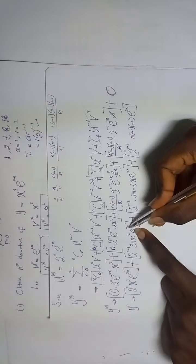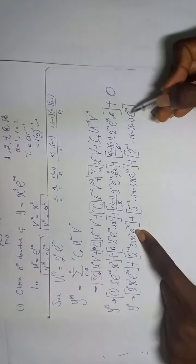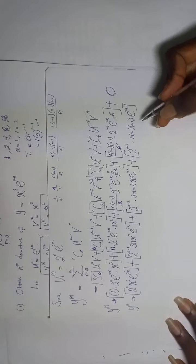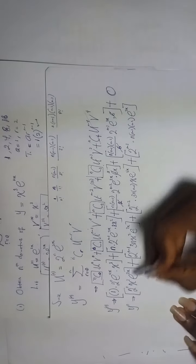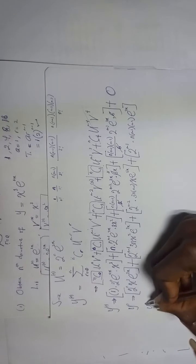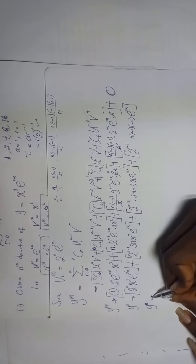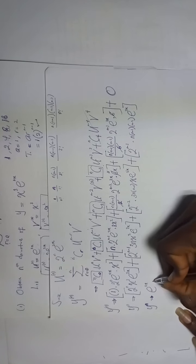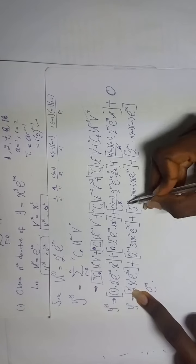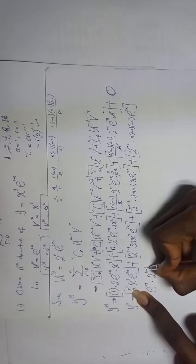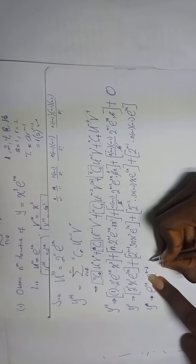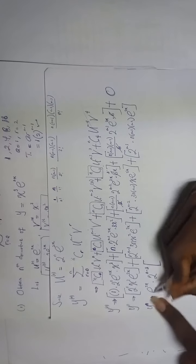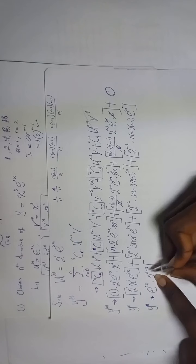I notice that e^(2x) is common to everything. Also, the powers of 2 are: 2^n, 2^(n-1), 2^(n-2), 2^(n-3). The least common factor is 2^(n-3), so I factor that out. When I factor out 2^(n-3), I divide each power of 2 by 2^(n-3): 2^n ÷ 2^(n-3) = 2³ = 8; 2^(n-1) ÷ 2^(n-3) = 2² = 4; 2^(n-2) ÷ 2^(n-3) = 2¹ = 2; 2^(n-3) ÷ 2^(n-3) = 1.